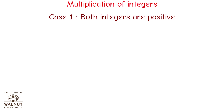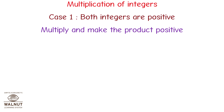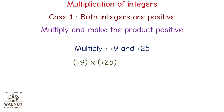Case 1: both integers are positive. Multiply and make the product positive. Multiply plus 9 and plus 25. Plus 9 multiplied by plus 25 is equal to plus 225. We multiply the numbers directly and get the answer. Since both numbers are positive, the product is also positive.